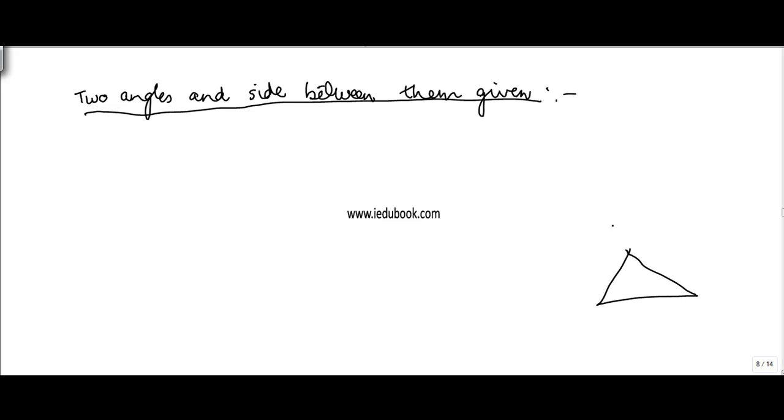Let's say you have a triangle ABC. If BC is equal to 6 centimeter, angle ABC is equal to 60 degree and angle BCA is equal to 60 degree, draw a triangle.